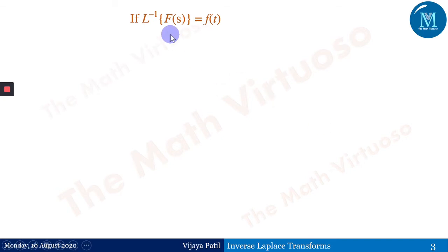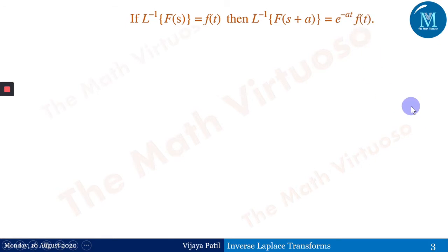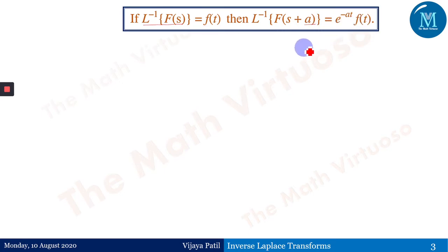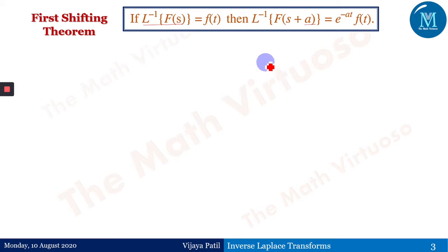If the Laplace inverse of F(s) equals f(t), then the Laplace inverse of F(s+a) equals e^(−at)·f(t). So if I am aware of the Laplace inverse of F(s), that f(t) gets accompanied by e^(−at) when taking the Laplace inverse of F(s+a). I have to adjust the given F(s) in terms of F(s+a), and this is known as the first shifting theorem, on the same line as the first shifting theorem of the Laplace transform.